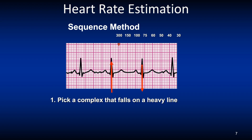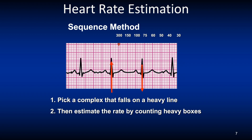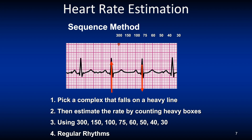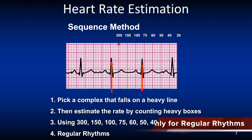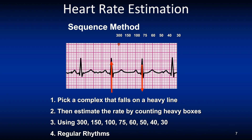First, select a QRS complex that falls as close as possible to a solid line. Then estimate the rate by counting the heavy lines. Then use your sequence method: 300, 150, 100, 75, 60, 50, 40, 30. It should be noted that this sequence method is a good option for regular rhythms.